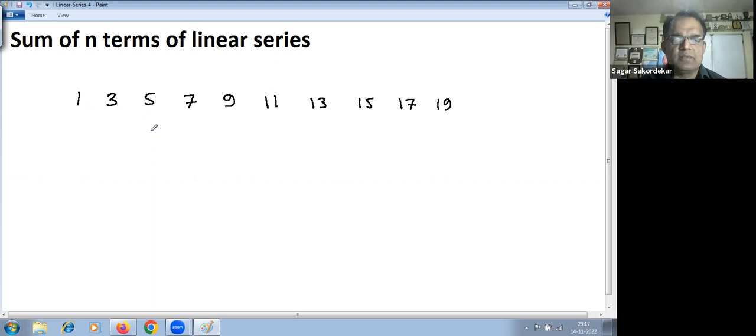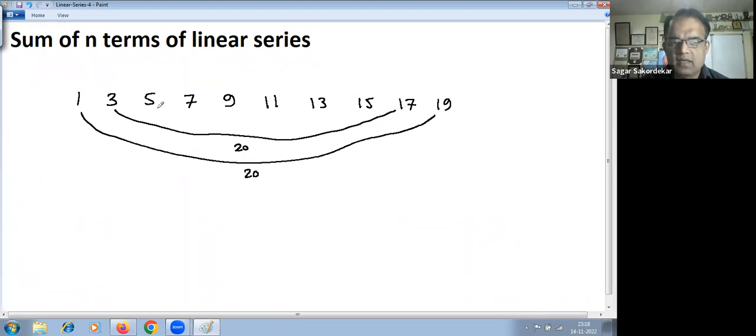This is the first 10 terms of this series. If you observe this, if you want to calculate the total, the easiest way to get the total is just add the first number with the last number. 1 plus 19 is 20. If you take second number with the second last number, 3 plus 17 is 20. If you take third with the third last term, this also is 20. Same way, if you add 7 and 13, it is 20. 9 and 11, it is 20.